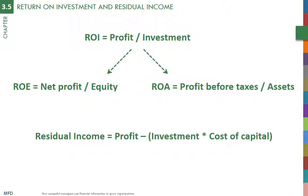Another measure of profitability is the residual income, RI, calculated as RI equals profit minus investment times cost of capital. The residual income measure introduces a new concept called cost of capital. The cost of capital is the rate of return an investor forgoes — in other words, the opportunity cost — when investing in a company.